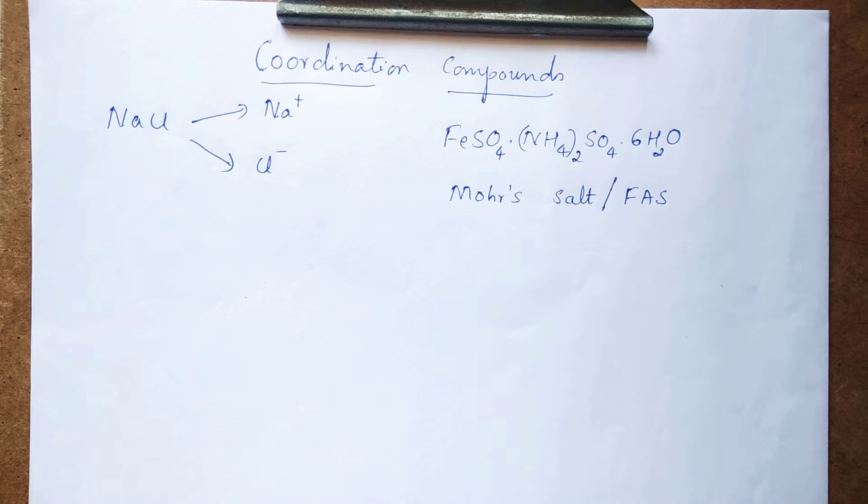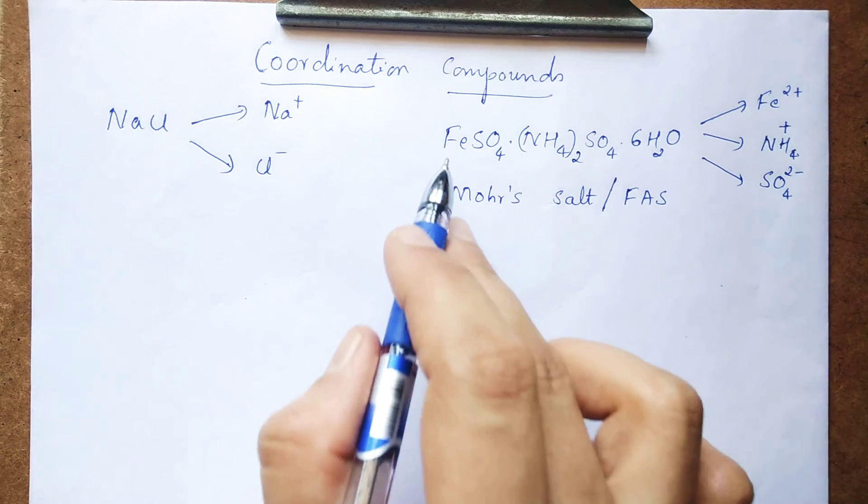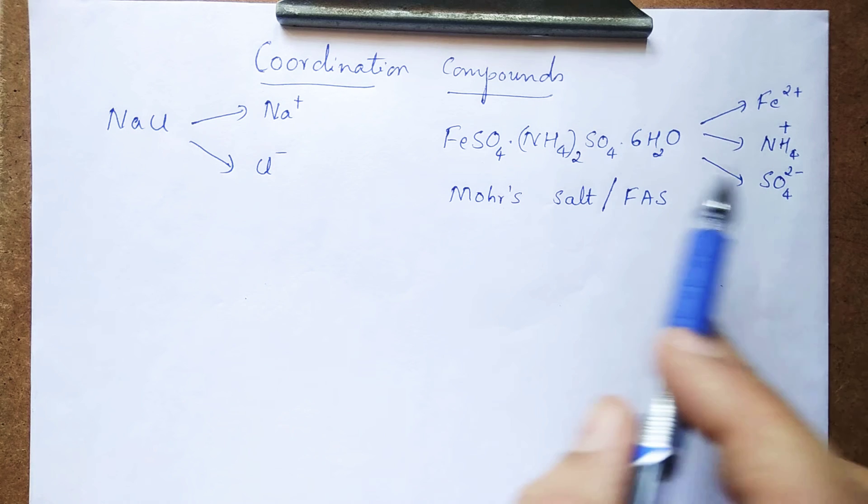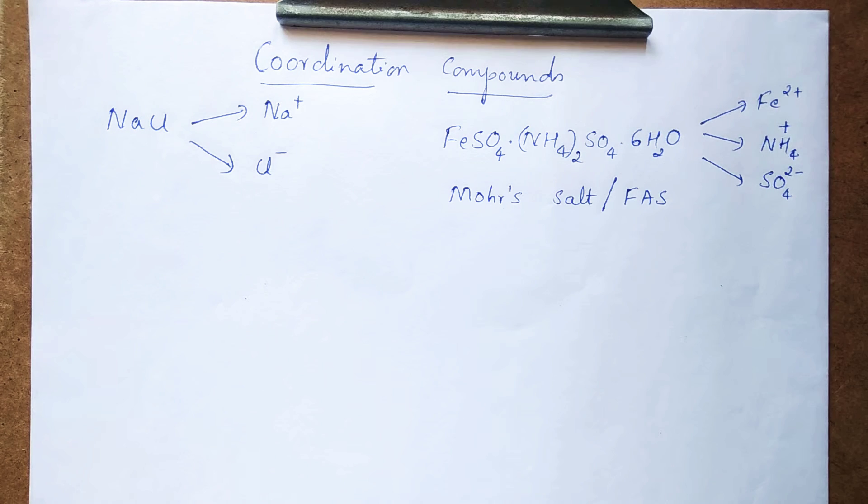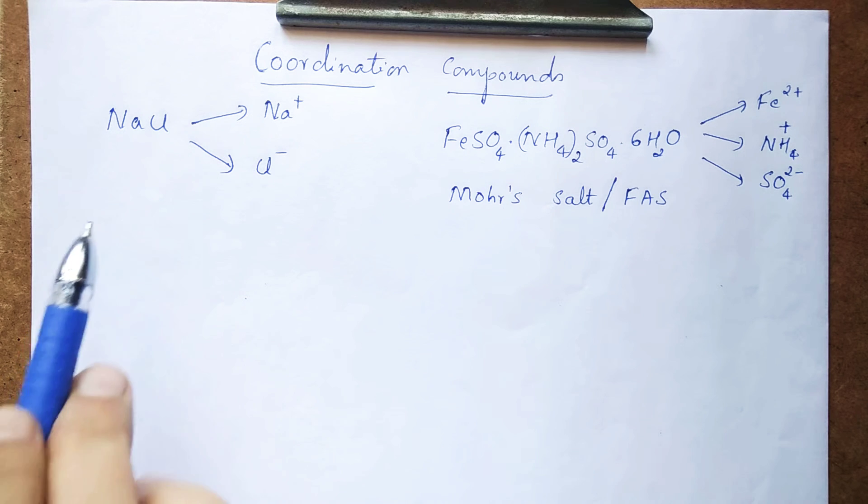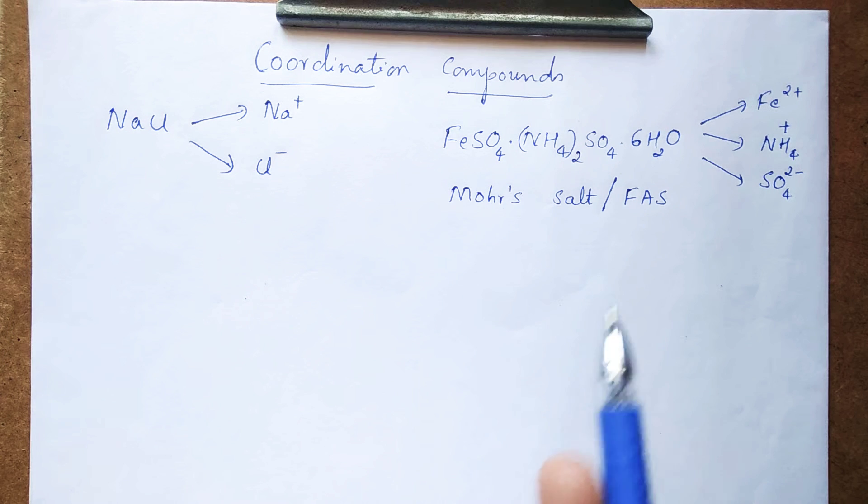Now if I try to dissolve this double salt in water, what will happen? Since it is a combination of two simple salts, it can also dissociate completely giving the constituent ions. So we get ferrous ion from ferrous sulfate, ammonium ion from ammonium sulfate, and sulfate ions. So here both simple salt as well as double salt are dissociating completely giving the constituent ions in water.